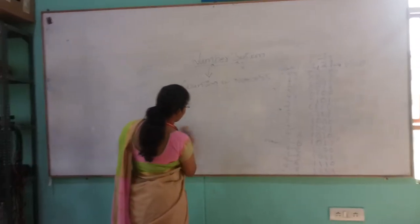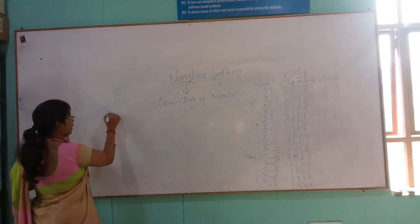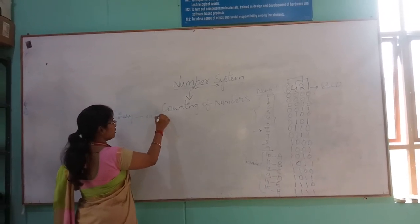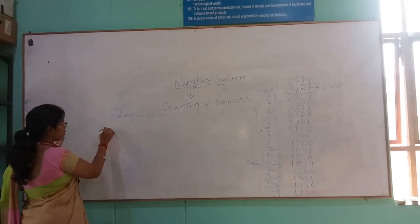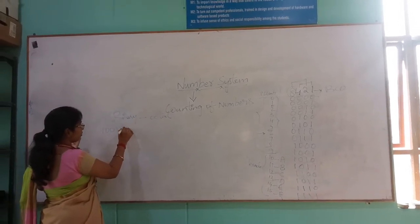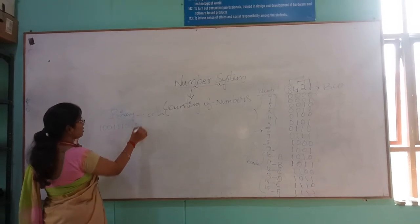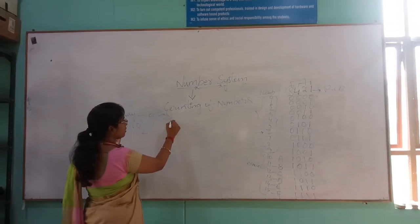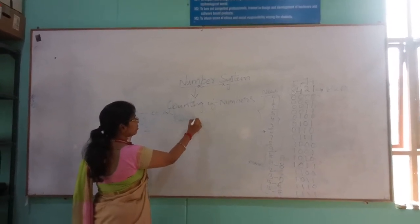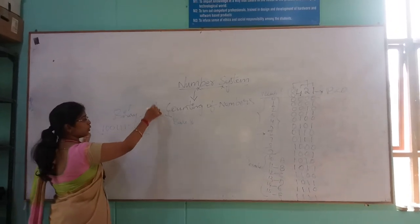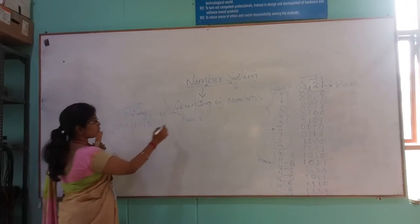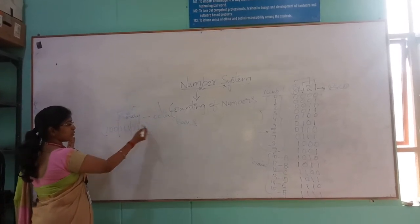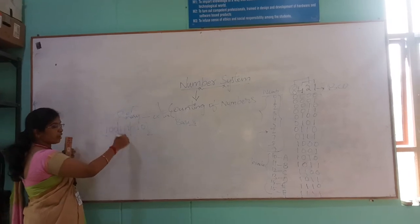First we will check for any binary number converted to octal. I am taking the binary number 1, 0, 0, 1, 1, 1, 0, 1, 0, 0. This binary number is denoted with base 2 and octal is defined with the base 8. Now I should convert binary into octal. For base 8, we should divide the binary number into groups of 3 bits, coming from the right side, converting into 3 slots.